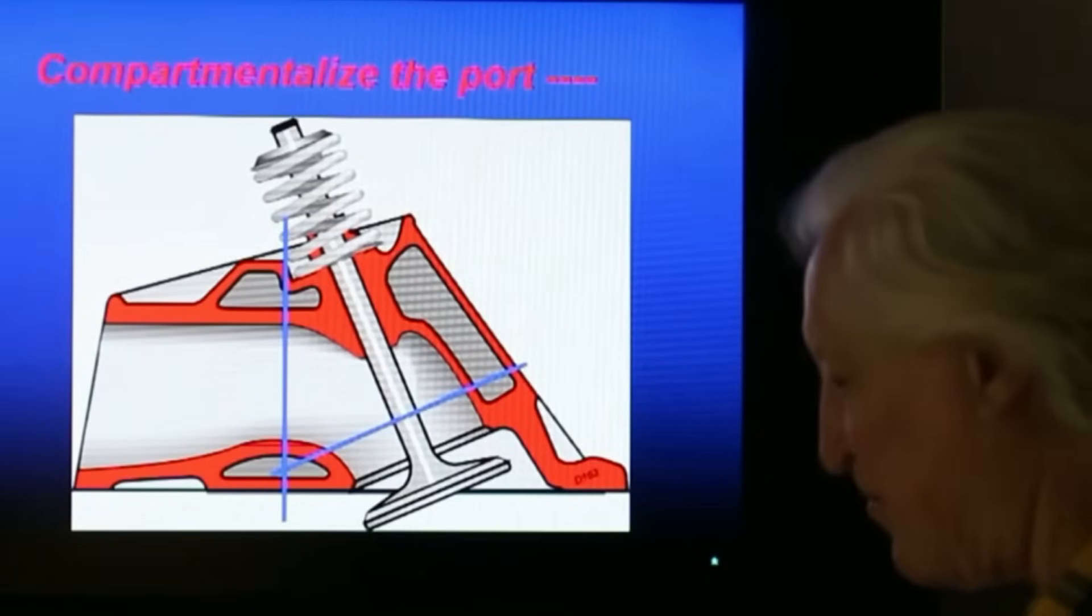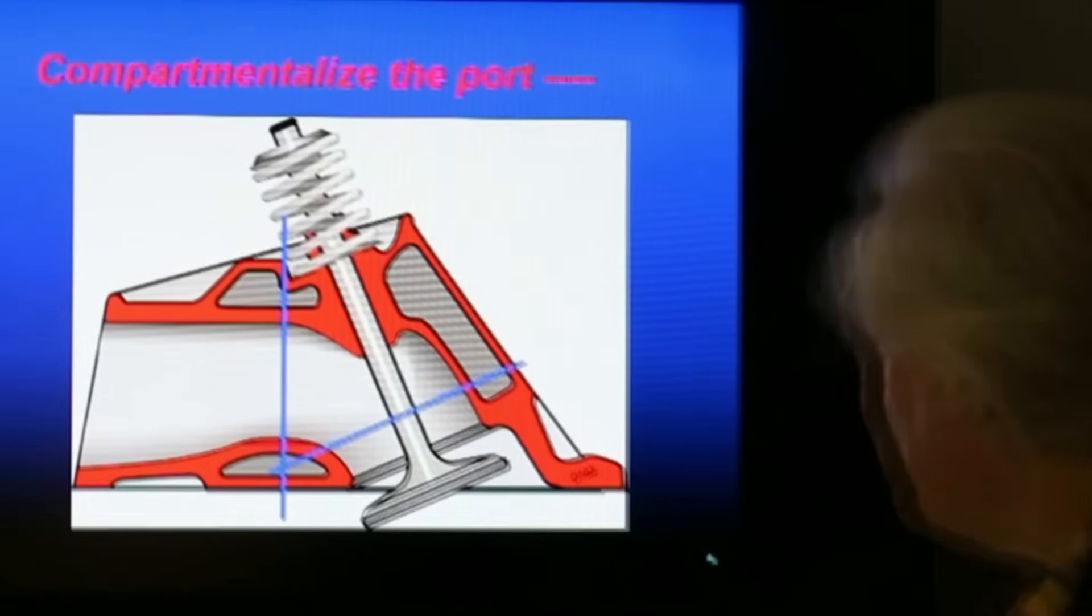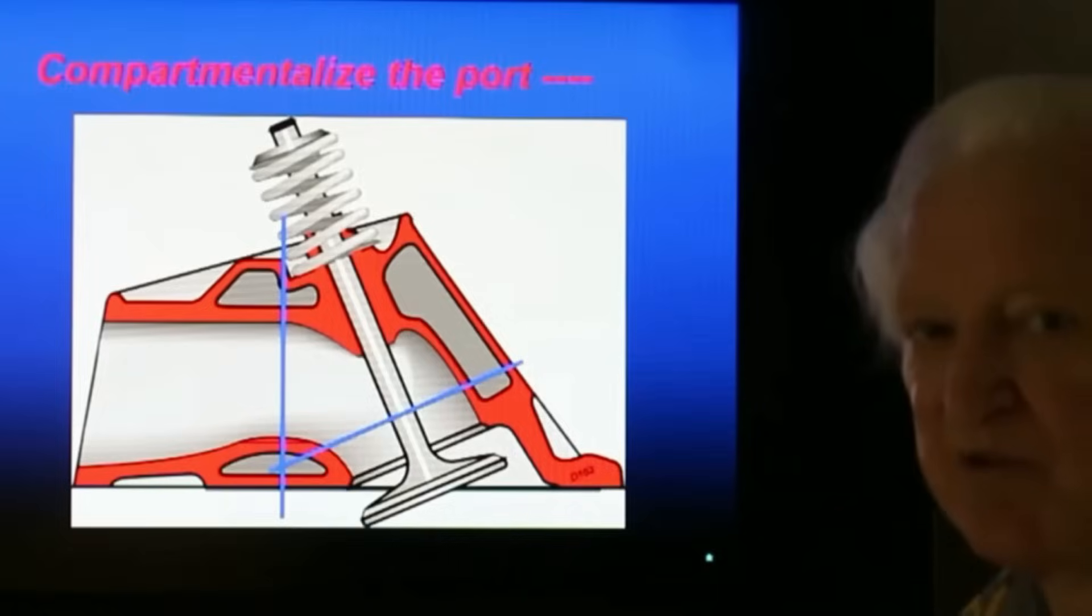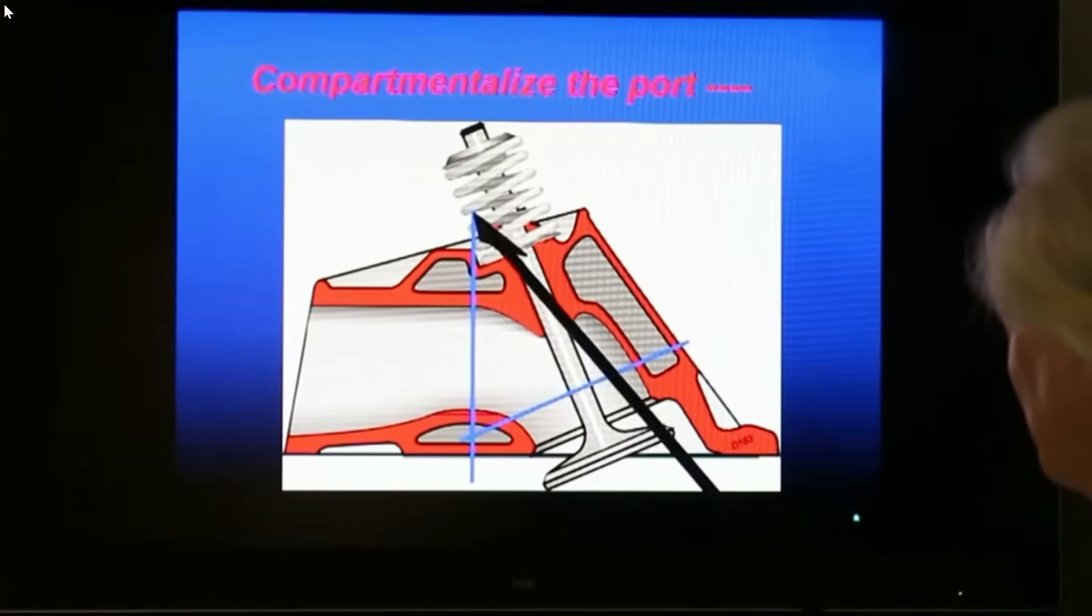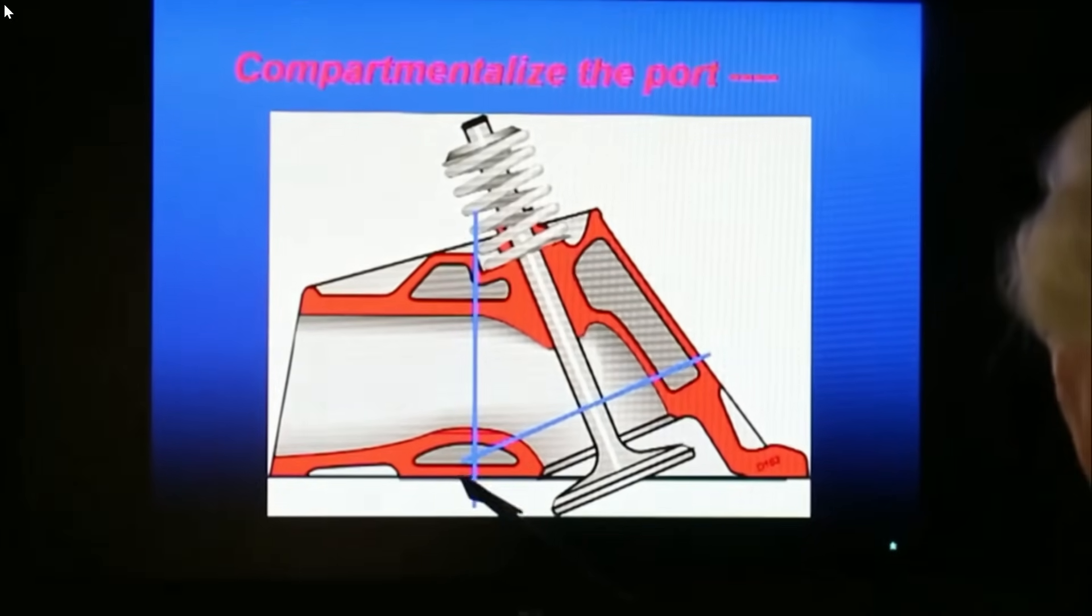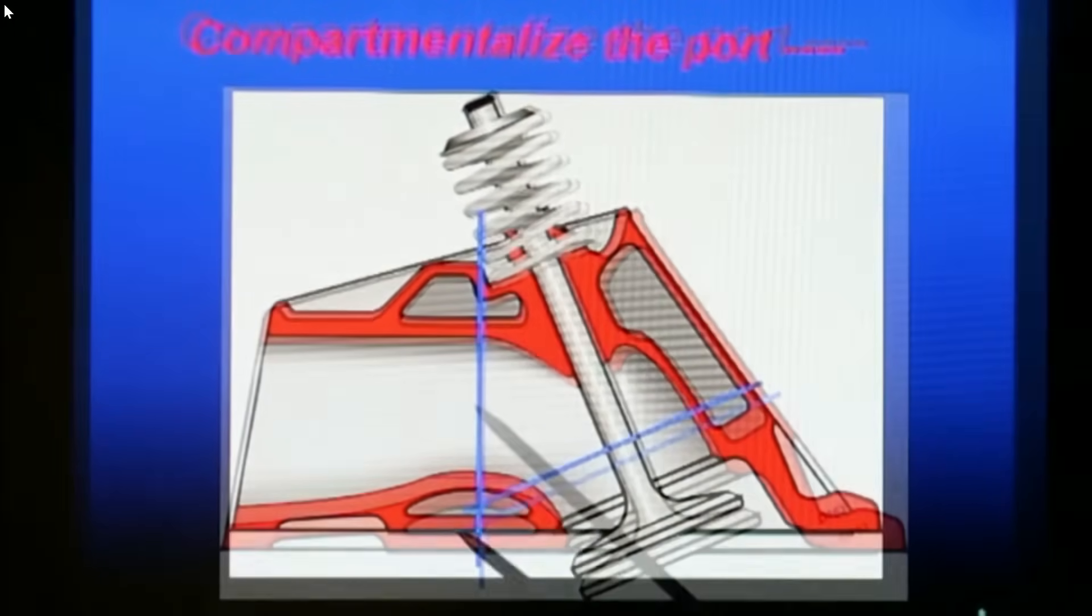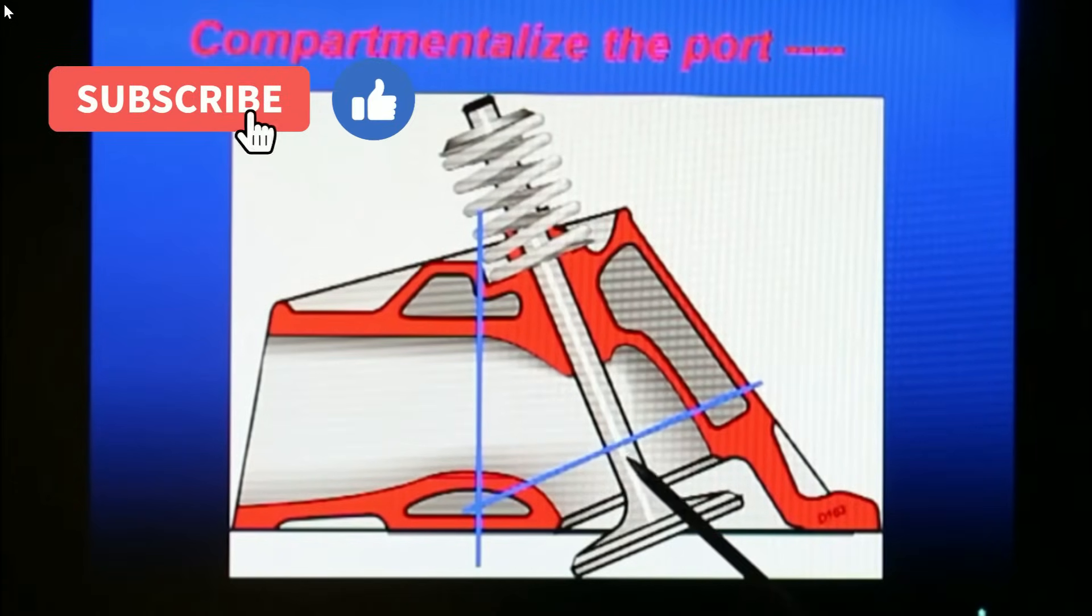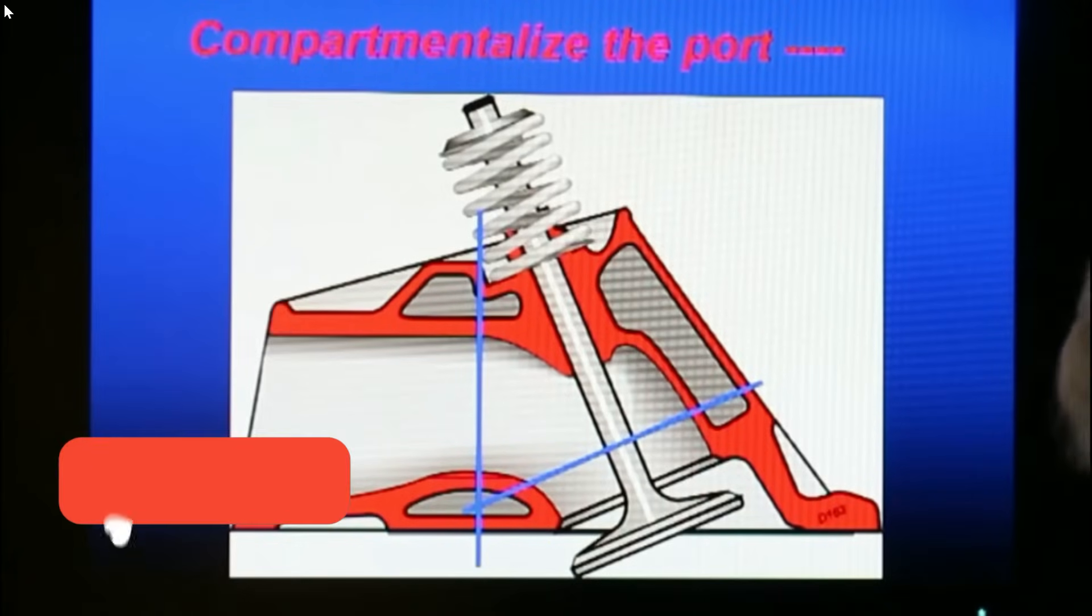Right, that would be about a 1960 something or other head. It was a small chamber head and it was considered to be one of the higher performance heads of the day. Now what I've done here is compartmentalized it. What we're going to do is we're going to cut through here and here and flow this, this and this separately to see how much they flow. So let's move along and see what that is.